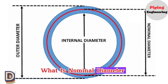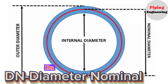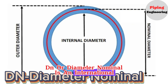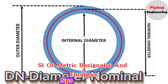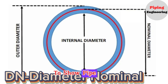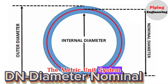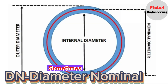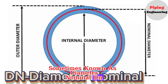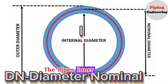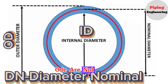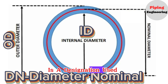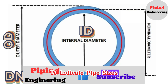DN, or Diameter Nominal, is an international designation — an SI or metric designator — and a European NPS equivalent used to show pipe sizes. The metric unit system uses nominal diameter, sometimes known as Diameter Nominal, DN. The pipe's inner diameter, ID, and outside diameter, OD, are not equal to the nominal diameter. Diameter Nominal is a designation used internationally to indicate pipe sizes.